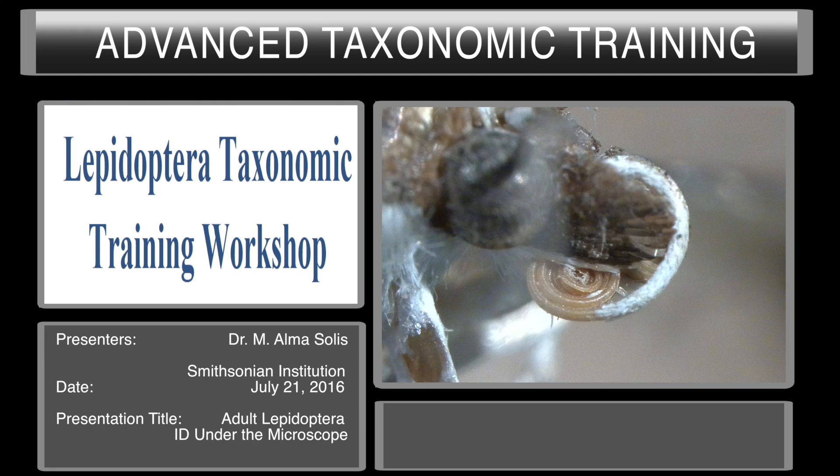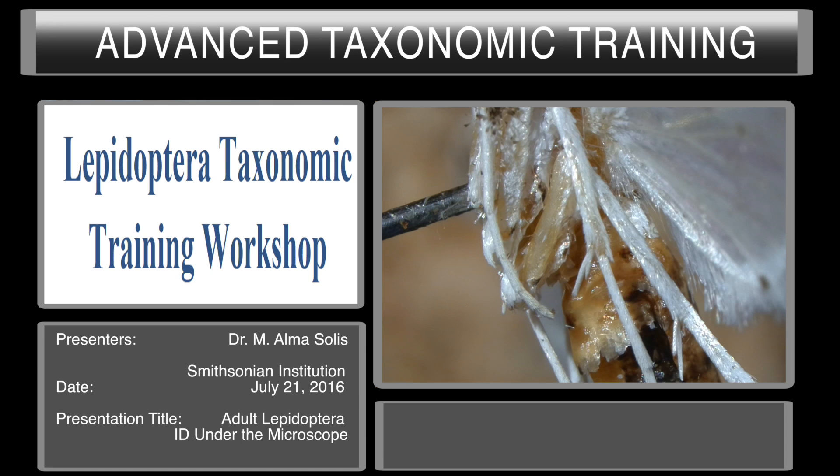Gelechioids do not have tympanol organs on the venter of the first abdominal segment. Pyraloidea does. So you will look for the tympanol organ between the metathorax and the first abdominal segment. This is one of the most difficult areas of the moth to see at all.